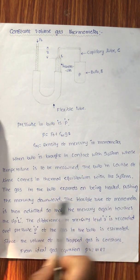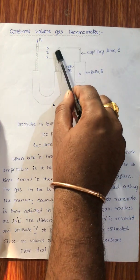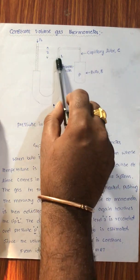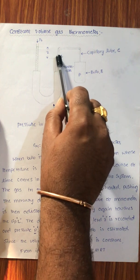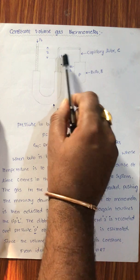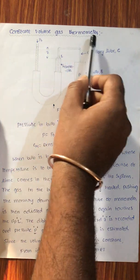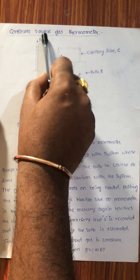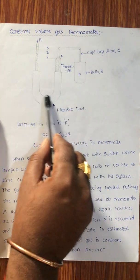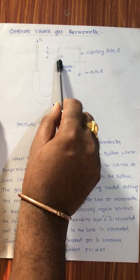The flexible tube of the manometer is then adjusted so that the mercury again touches the lip L. Because when this gas expands and pushes the mercury downward, the volume of the gas increases since some space is provided and occupied by the gas. But the concept is constant volume gas thermometer, so we must maintain gas volume as constant. We need to adjust the flexible tube so that the mercury inside the manometer goes back and touches lip L again.